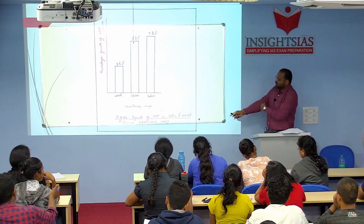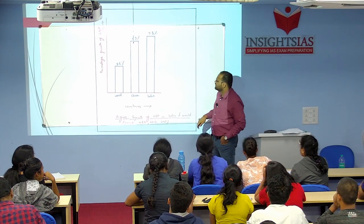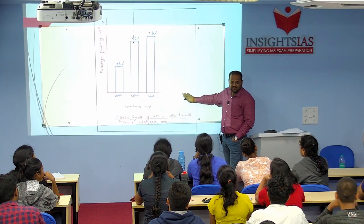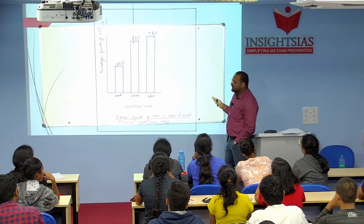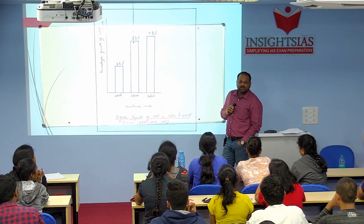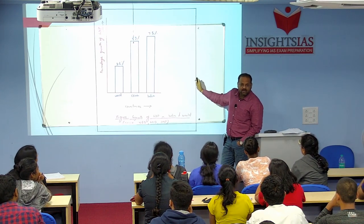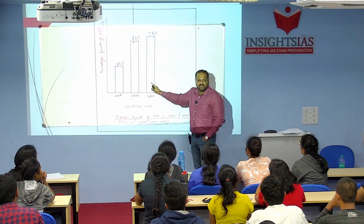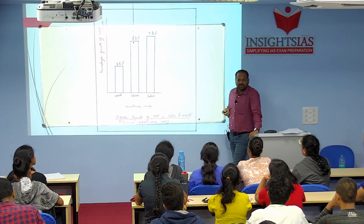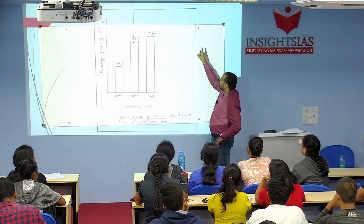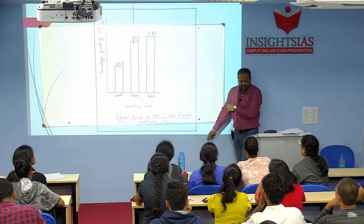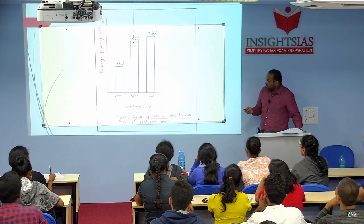From an answer-writing point of view: whenever presenting comparative data, draw two axes, mark India, China, and the world, and draw these trend lines. That is what value addition means — what toppers talk about. After drawing, box it and give a name to the figure. The name is important. This was just for writing purposes — growth rate has been stable and increasing while the world is on a declining trend.